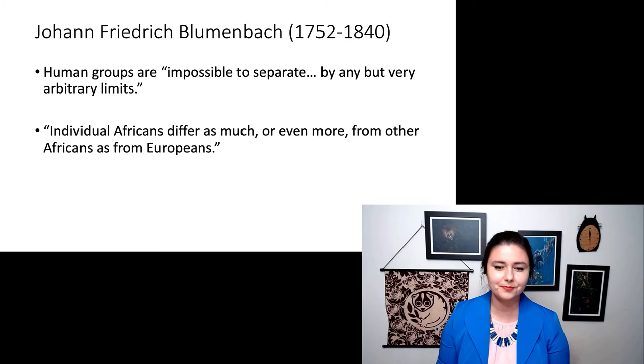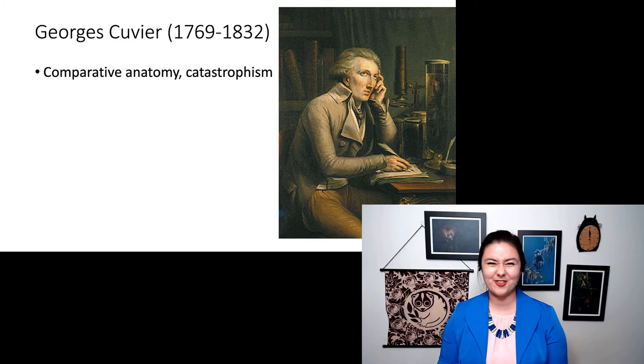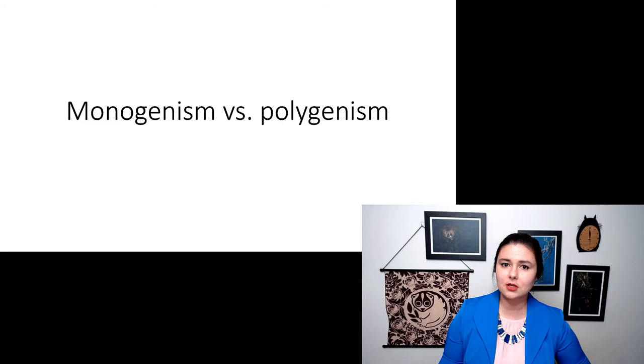Next we have George Cuvier in the late 1700s and early 1800s. He was a comparative anatomist, he was known for his theory of catastrophism, and he named three races: Africans, Europeans, and Asians.